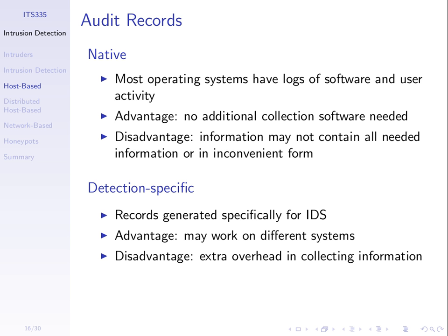What's the difference? In the first case, we don't need any special software — the logs already exist. But the logs produced by different software and applications may be in many different formats: maybe text, maybe a binary file, maybe a database. We need to handle all those different formats. Whereas if the intrusion detection system does its own log keeping, it's independent of the software and operating system, but it requires extra processing and record taking. Either way, we need some log of what's happening on the system.